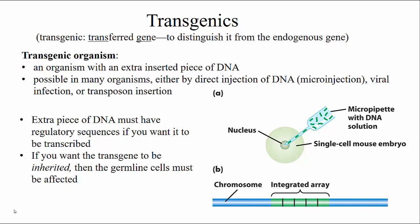Regardless of the way that these organisms were created, the important thing is that that extra piece of DNA has to be inserted into the chromosome of that individual so that it can be inherited when that cell divides. In fact, it can even be inherited to the next generation. That piece of DNA that is inserted must have its own regulatory sequences if you want it to be transcribed.